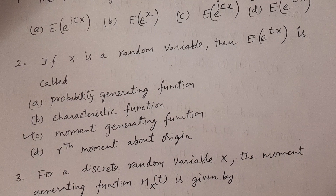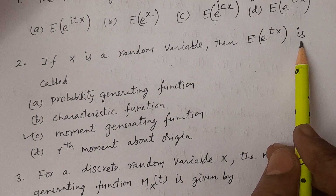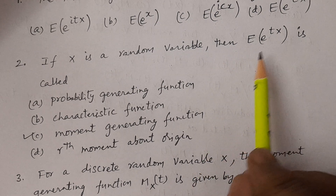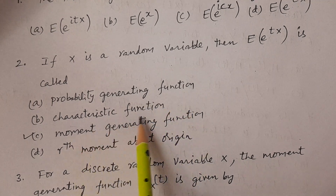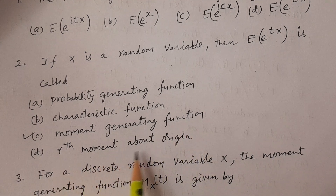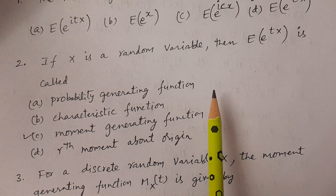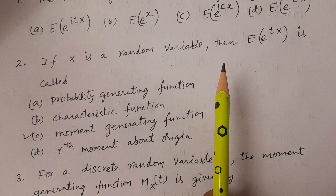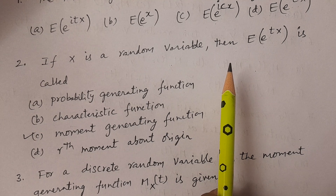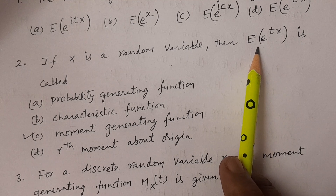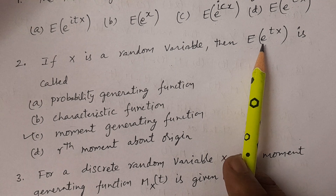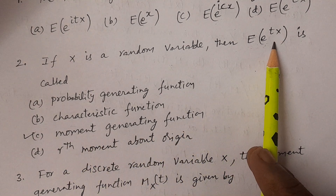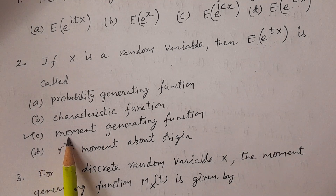Question number 2. If x is a random variable, then expectation of e power tx is called? Options: A. Probability generating function. B. Characteristic function. C. Moment generating function. D. r-th moment about origin. Answer is moment generating function. In the previous question, the formula was given in forward direction; here the same question is asked in reverse. Expectation of e power tx is called MXT — that is, moment generating function. The answer is option C, moment generating function.